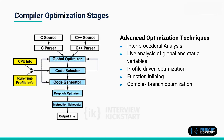In effect, these new analysis techniques enable the compiler to critique high-level C or C++ source code in order to combine optimizations more judiciously for maximum effect. Some of the advanced optimization techniques include inter-procedural analysis, live analysis of global and static variables, profile-driven optimization, function inlining, and complex branch optimization.